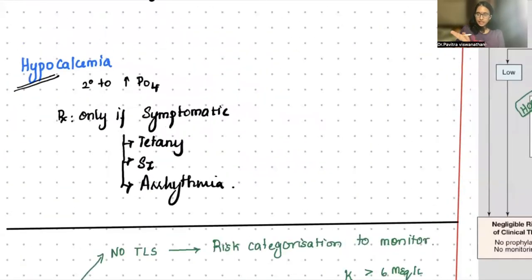Hypocalcemia. We already discussed. Calcium likes phosphate. So, if both are more than 60, the product, they bind together and they precipitate. So, you will not treat asymptomatic hypocalcemia. Don't run behind numbers for calcium. 6, 6.5 doesn't matter as long as the patient is asymptomatic. If the patient is symptomatic with tetany, seizures, arrhythmia, then treat your calcium under close monitoring. These are all the four major metabolic abnormalities that you will see in a tumor lysis.